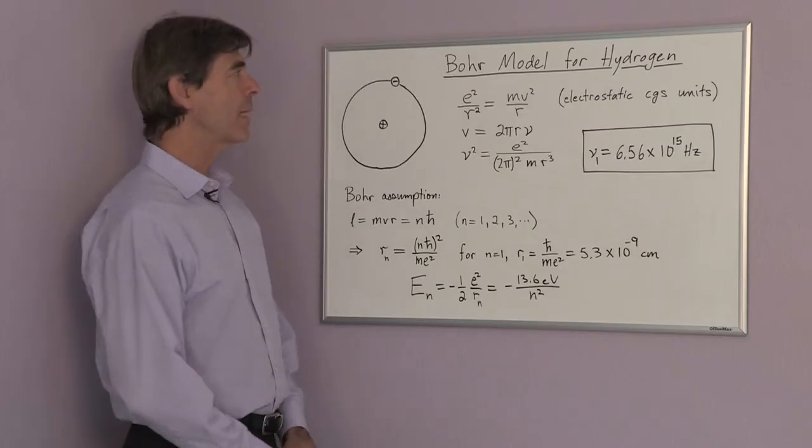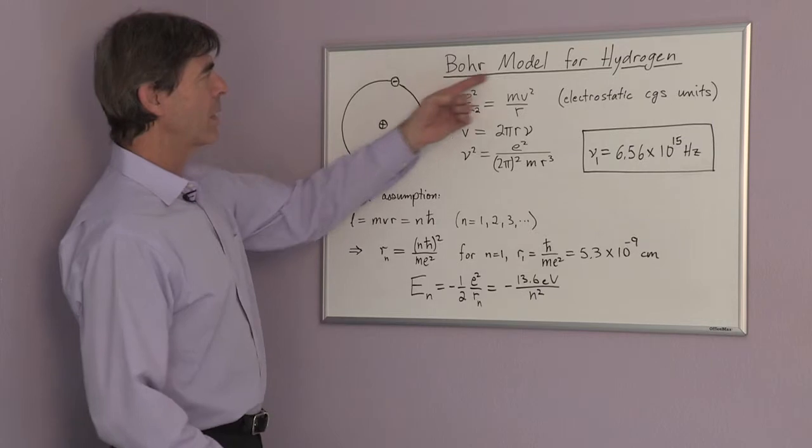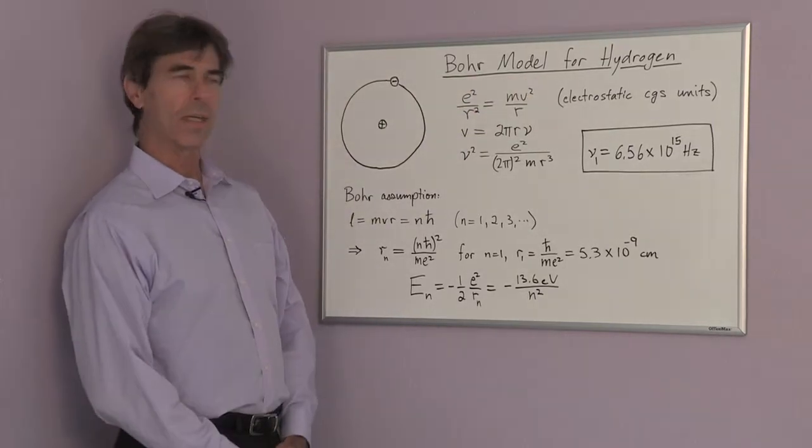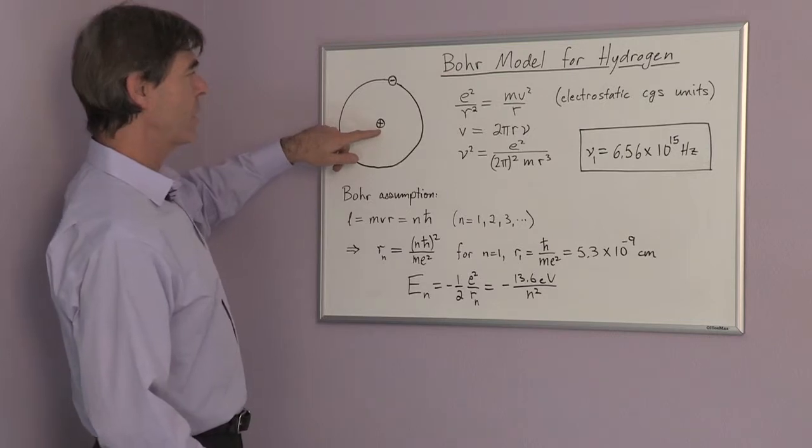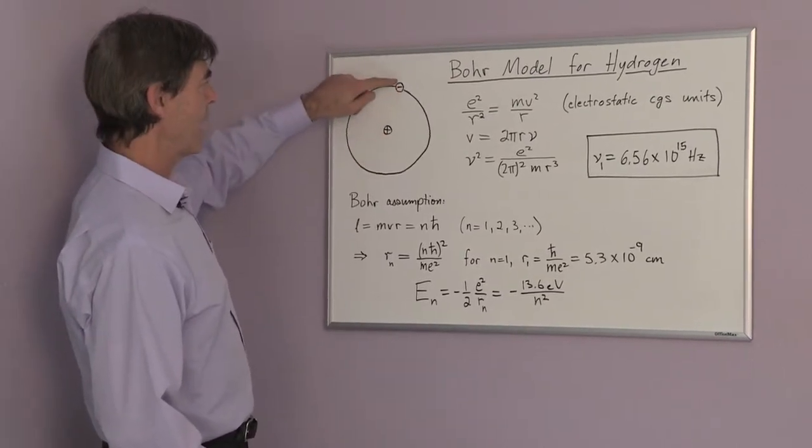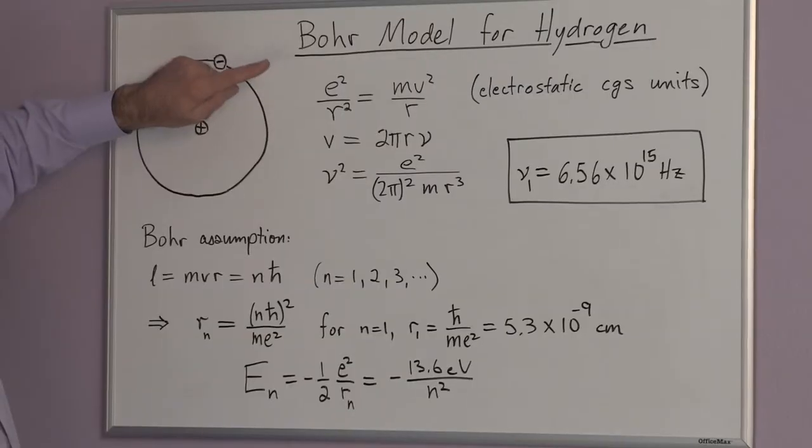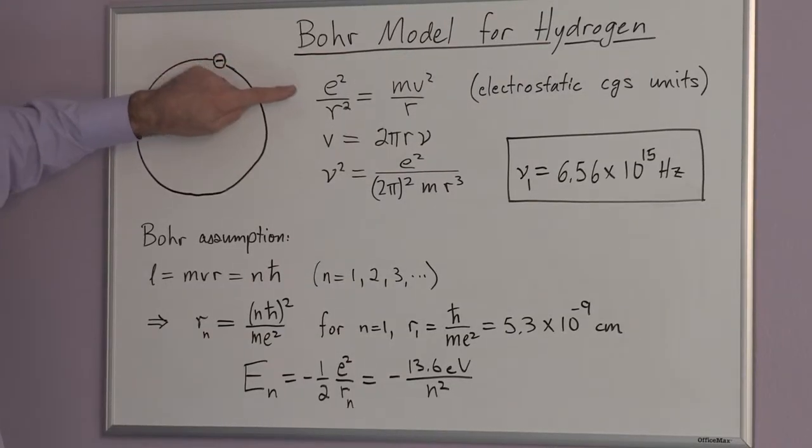Niels Bohr, a physicist who later became a Nobel Prize winner in 1922, had a model for hydrogen which looked like a planetary system. We have the nucleus, which is one proton, and then an electron rotating around it in orbital motion.